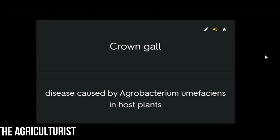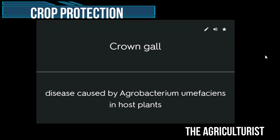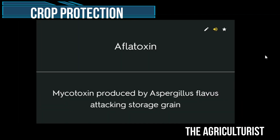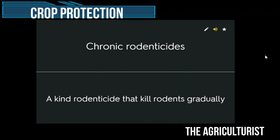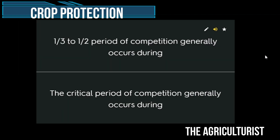Crown gall disease — caused by Agrobacterium tumefaciens in host plants. Aflatoxin — mycotoxin produced by Aspergillus flavus attacking stored grain. Chronic rodenticide — a kind of rodenticide that kills rodents gradually. One-third to one-half — the critical period of competition generally occurs during this portion of the crop growing season.